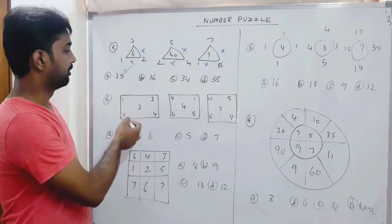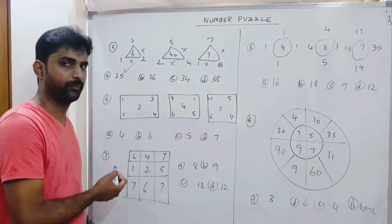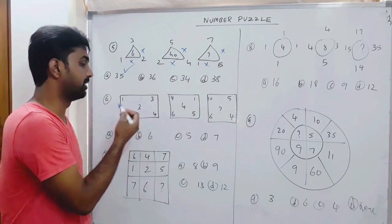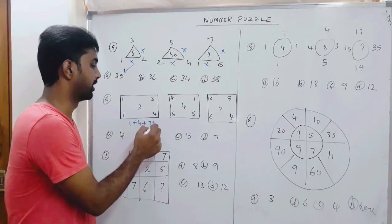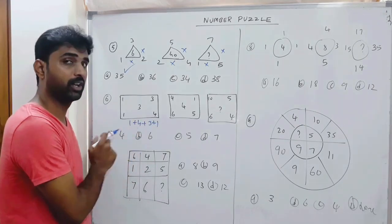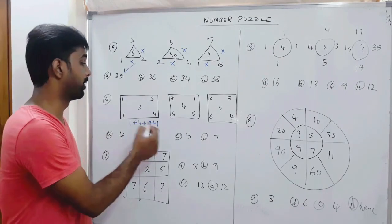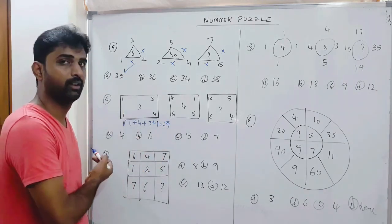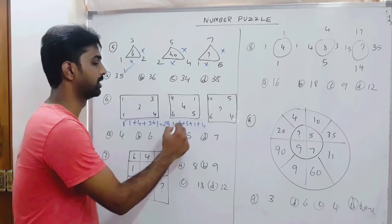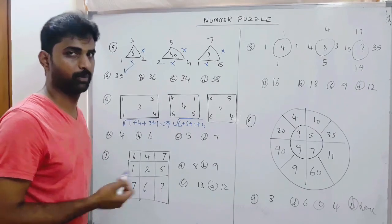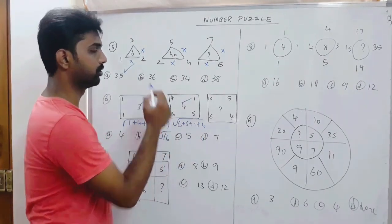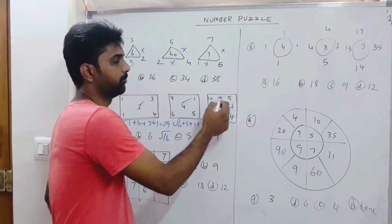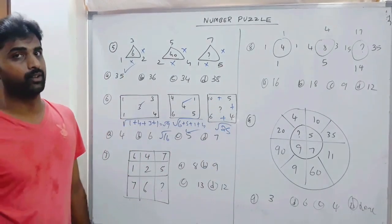Likewise, if all numbers are one digit, try addition then square root. For example: 1 + 4 + 3 + 1 = 9, and square root of 9 is 3. Check: 6 + 5 + 1 + 4 = 16, and square root of 16 is 4. Continuing: 6 + 4 + 10 + 5 = 25, square root of 25 is 5. That is how you can easily score.